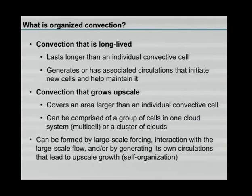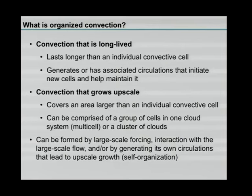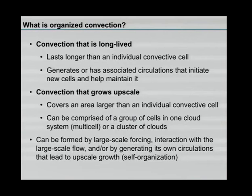If you look up in the textbooks what organised convection is, either they won't spell it out explicitly or you'll get a variety of different definitions. These are my definitions — you may agree or disagree. The two key aspects are: convection that is long-lived, meaning it lasts longer than an individual convective cell, and convection that grows upscale in the spatial dimension — larger than an individual thunderstorm. It can be comprised of a group of cells in one cloud system, such as a multi-cell storm, or a cluster of clouds organised together in some way.